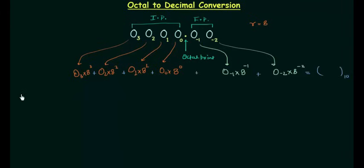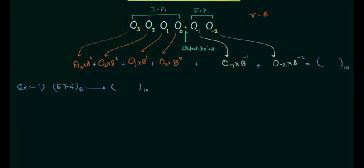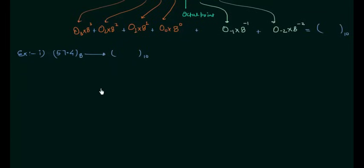Now we will move to the first example. The octal number is 57.4. This is an octal and we want the decimal equivalent of this number. We will follow the same procedure. I will multiply 7 by 8 raised to power 0, then I will multiply 5 by 8 raised to power 1, and then I will multiply 4 by 8 raised to power minus 1.